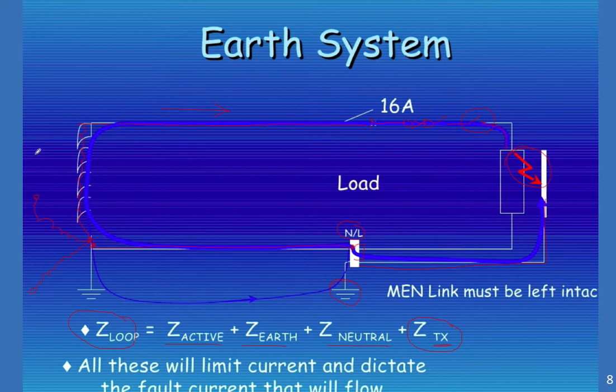TX is an abbreviation for transformer. And the transformer itself has an impedance which allows for the amount of current that can be provided from the primary side into our secondary side. So all of these will limit the current and dictate the fault level that will flow.